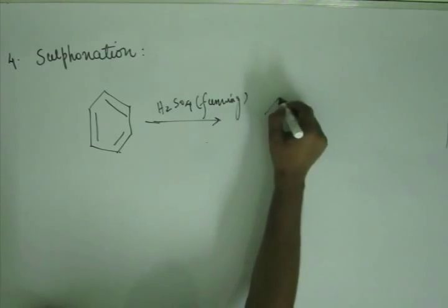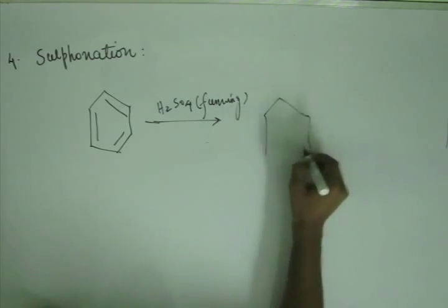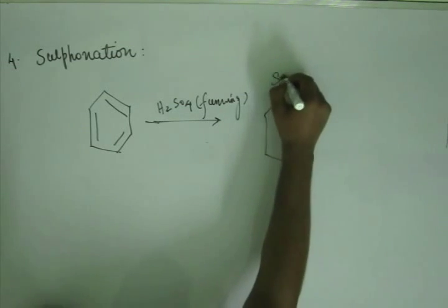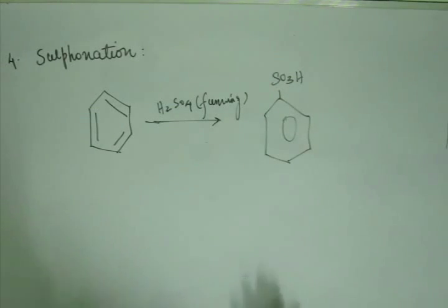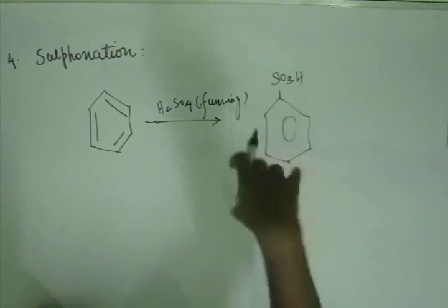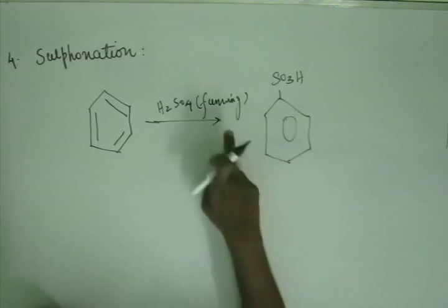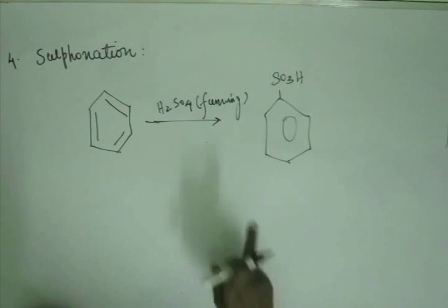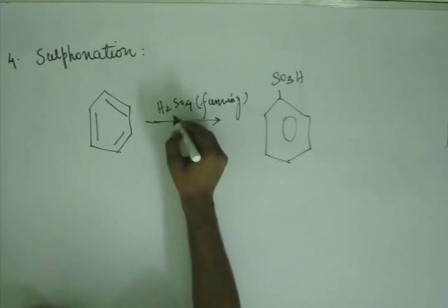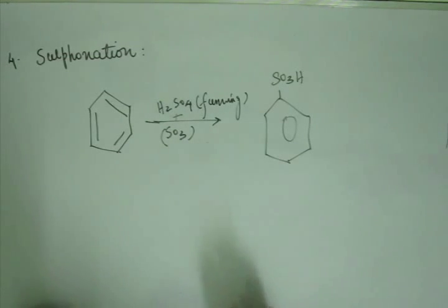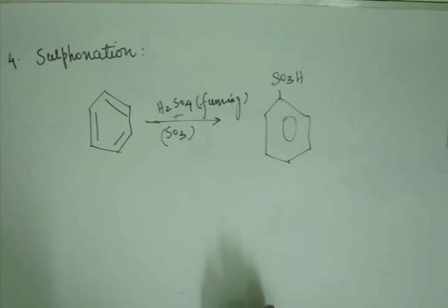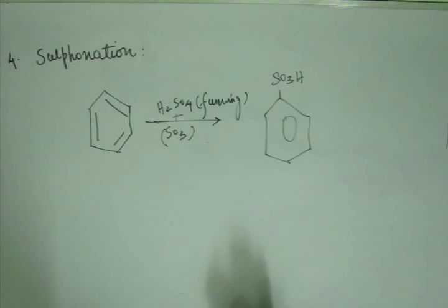Fuming H₂SO₄ produces benzene sulfonic acid, where the sulfonic acid group is attached to benzene. Fuming means something is coming out like fumes — that is H₂SO₄ plus SO₃. Sulfur trioxide gas is dissolved in H₂SO₄, which keeps coming out appearing as fumes. That is called fuming H₂SO₄, and it is used to carry out sulfonation.